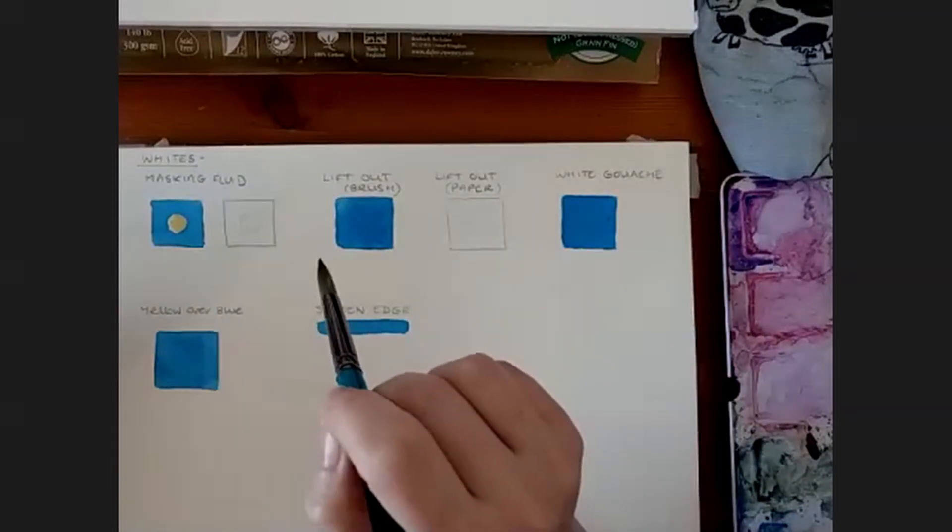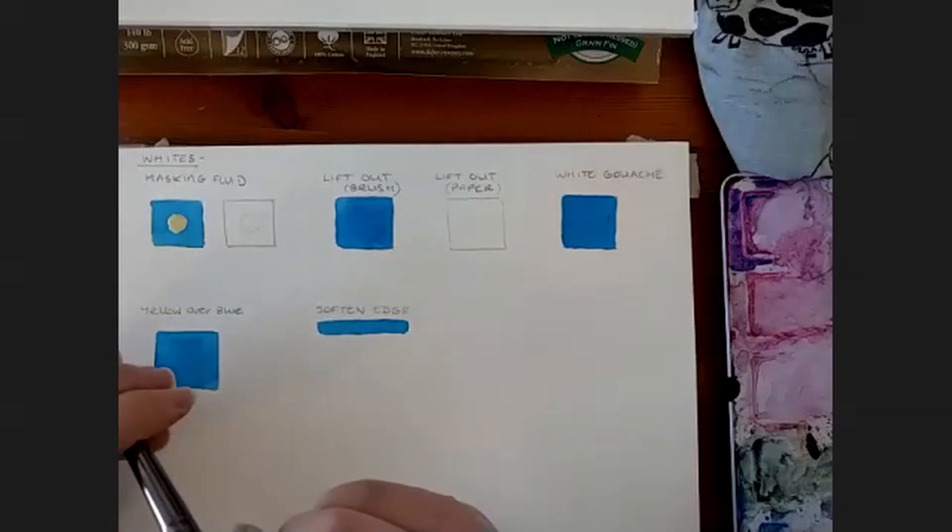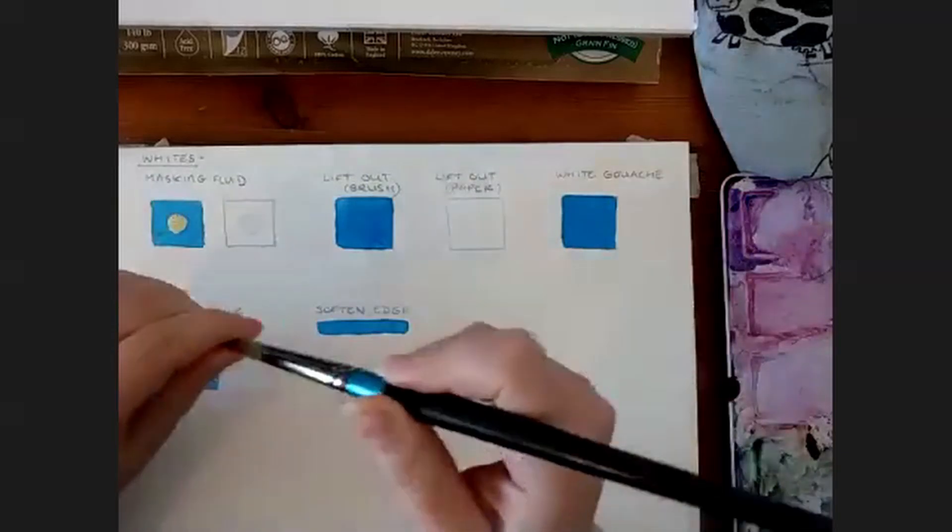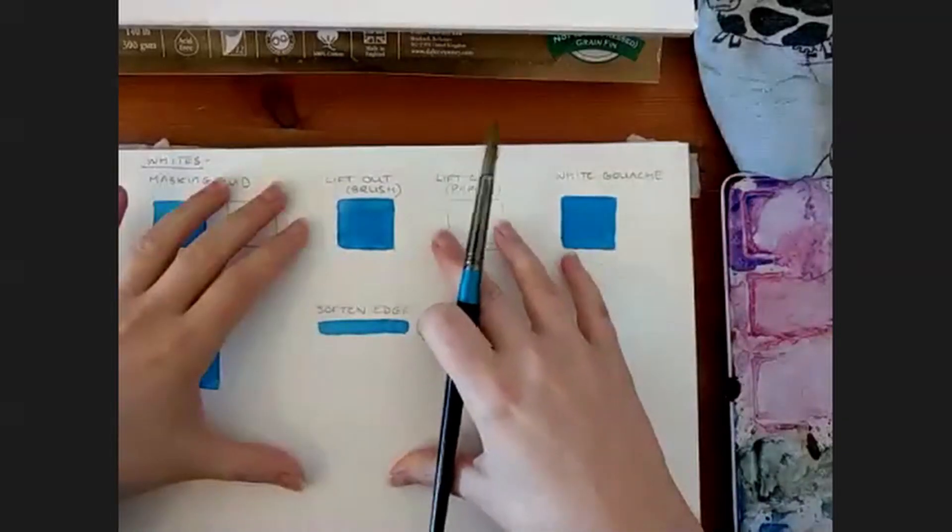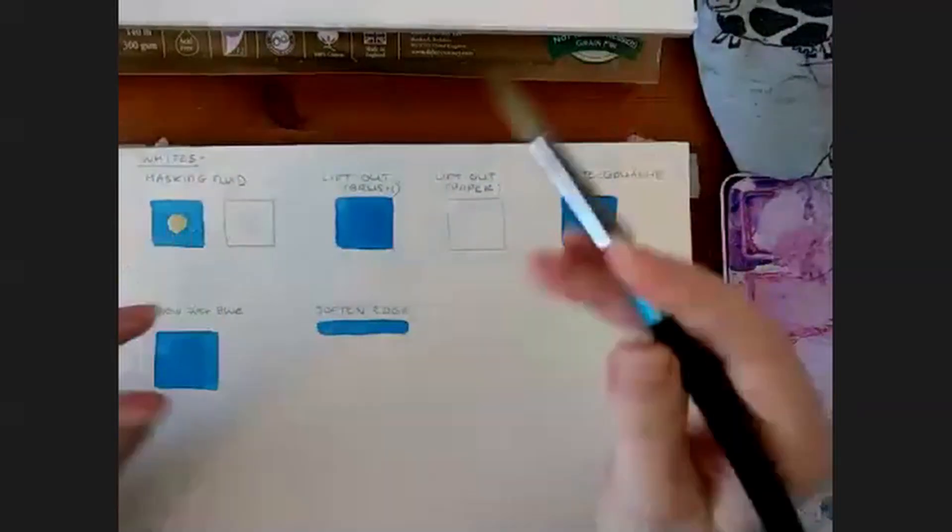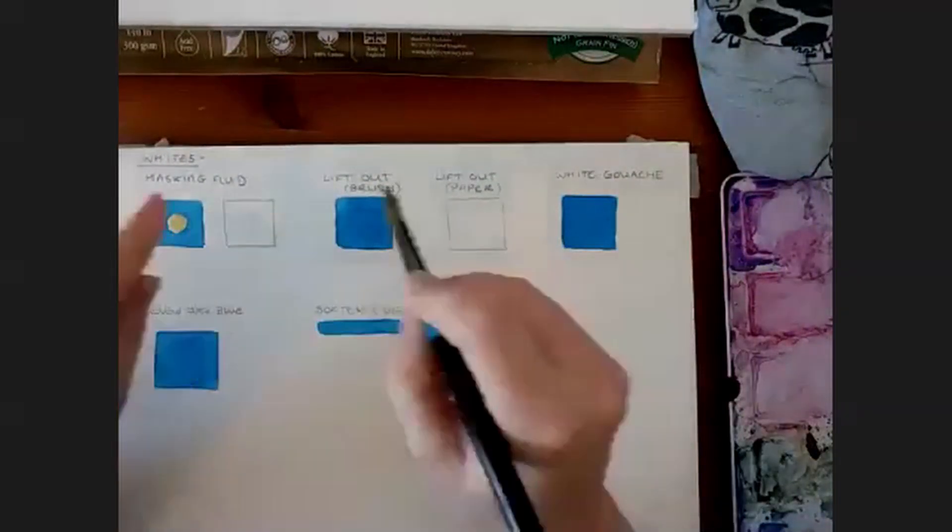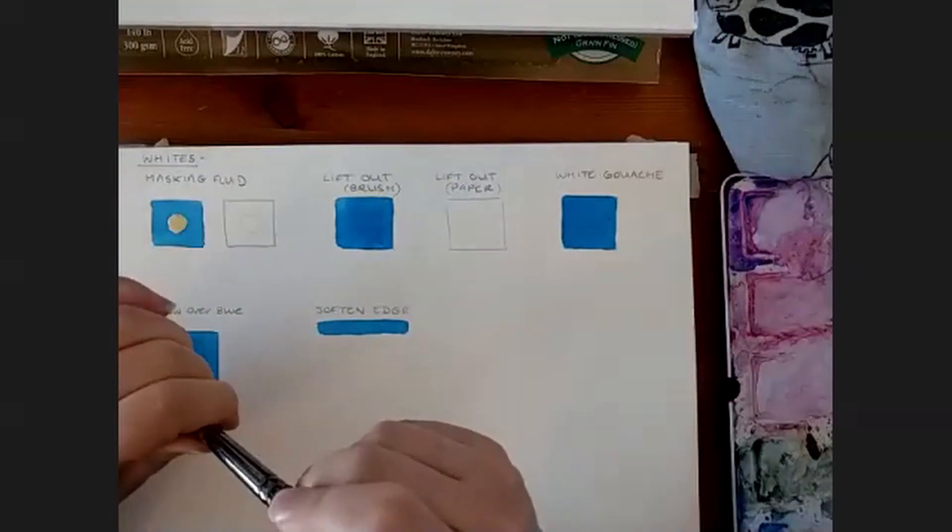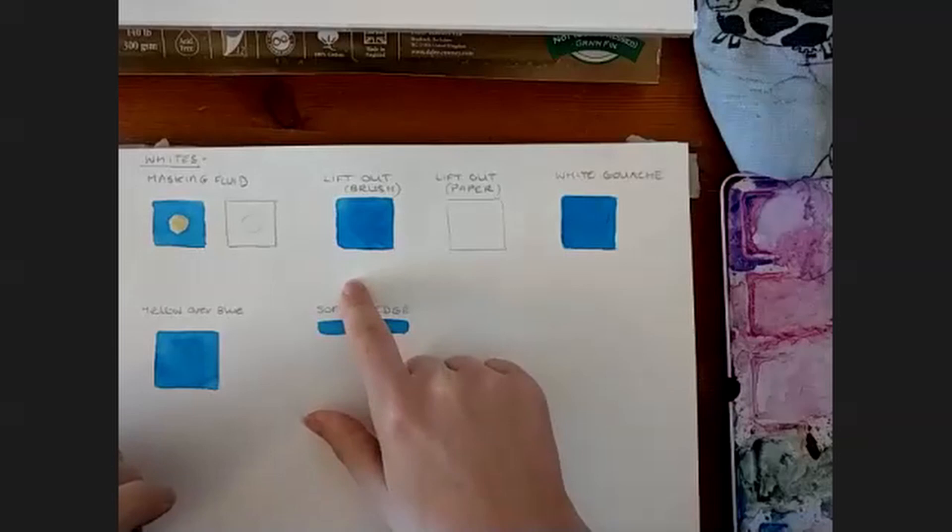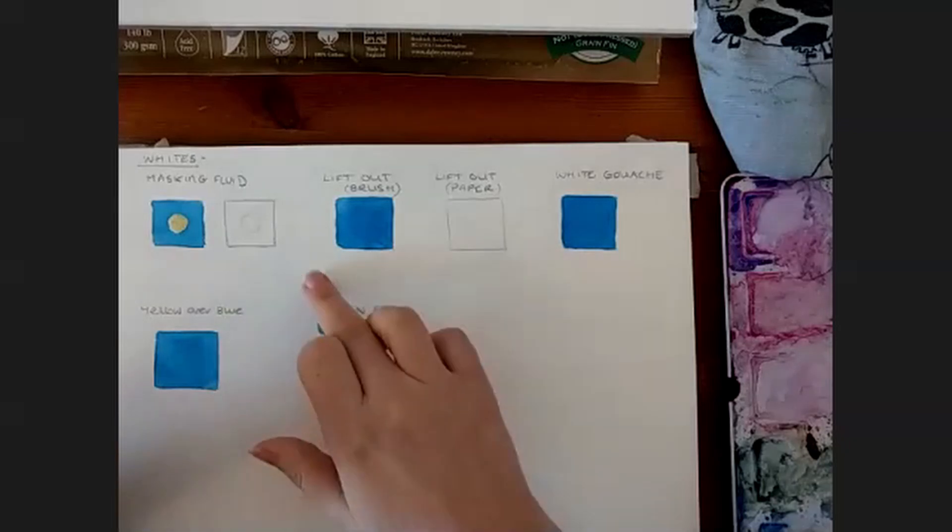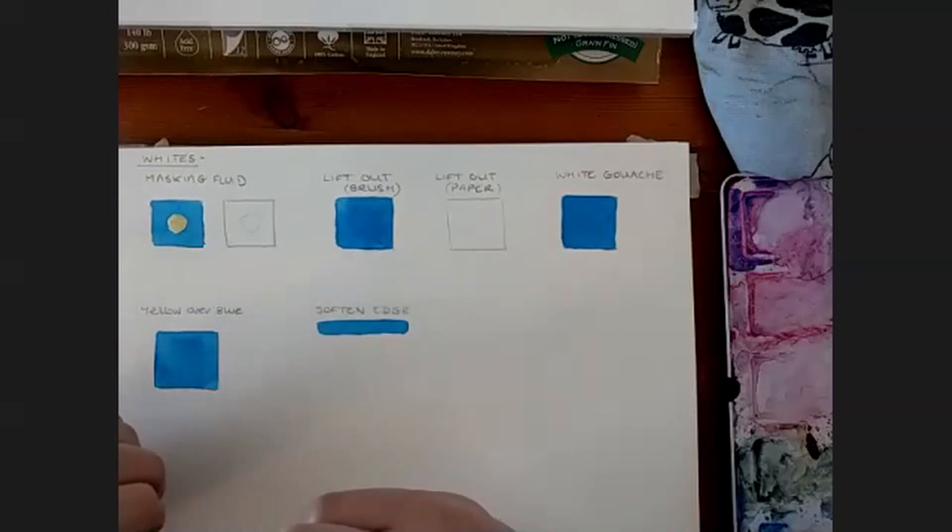In watercolor you can't do that because it shows the other color underneath. So you have to work from light colors first and then build up the layers getting darker, unless you paint around something and leave that bit of paper clear. A lot of the time you leave the paper clear to show your whites in watercolor. So that becomes the white instead of using white paint.